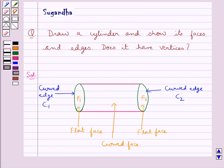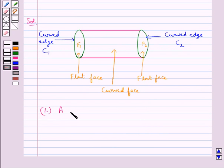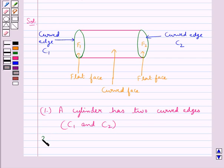So we have drawn a cylinder and marked its edges and faces. Thus we say that a cylinder has two curved edges, C1 and C2 as marked in the figure. Then a cylinder has one curved face and two flat faces.